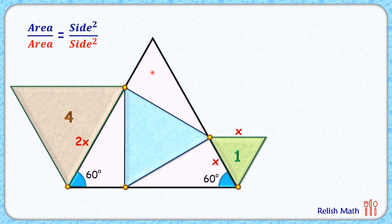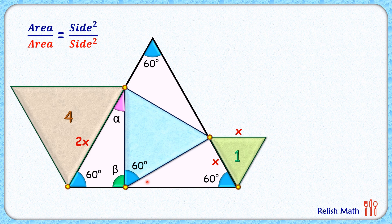For this pink equilateral triangle, each angle is 60 degrees. Let's assume this angle here is alpha degrees and this angle is beta degrees. So alpha plus beta is 120 degrees. For this blue equilateral triangle, this angle here is 60 degrees, and thus angle beta plus the remaining angle equals 120 degrees, so the remaining angle will be alpha degrees. By the same logic, this angle will be beta and this angle will be alpha, and this angle will be beta degrees.